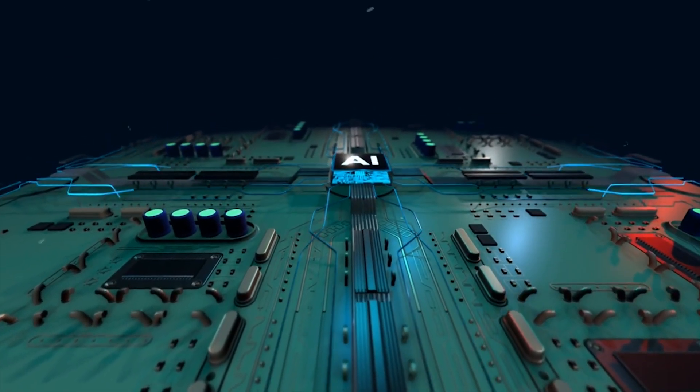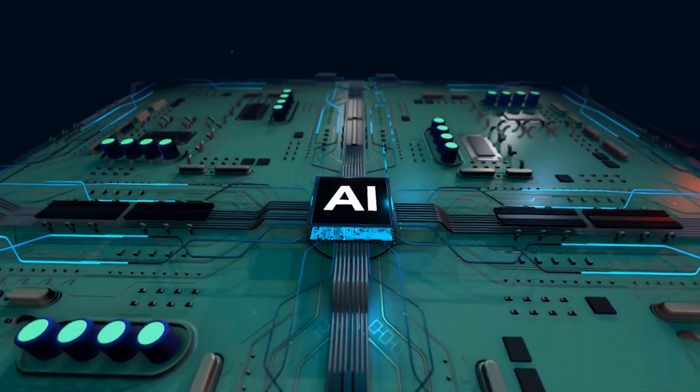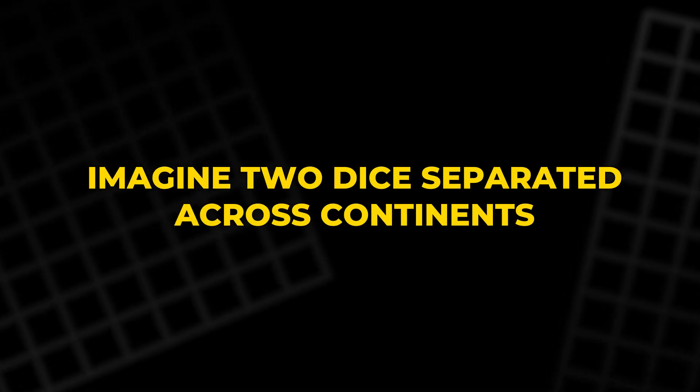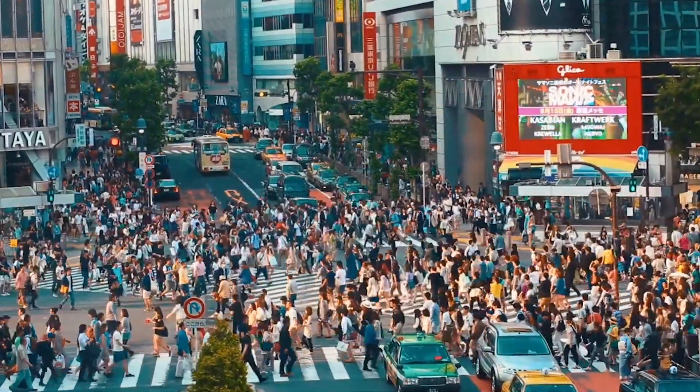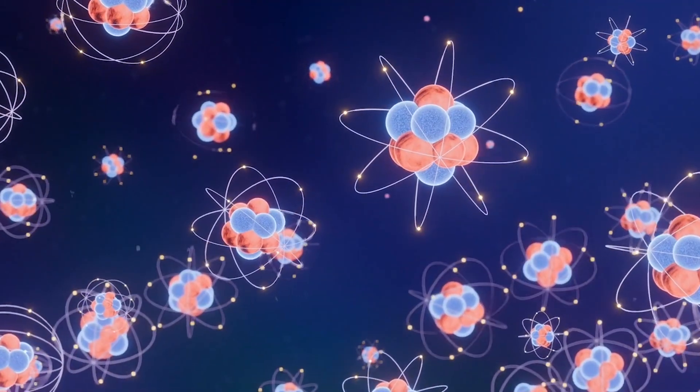Change one, and you instantly affect the other, even if they are far apart. Imagine two dice separated across continents. Roll one in New York, and the other in Tokyo instantly matches. That's entanglement.